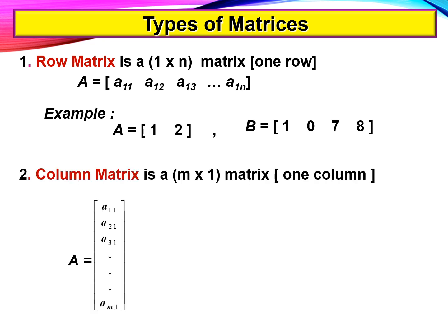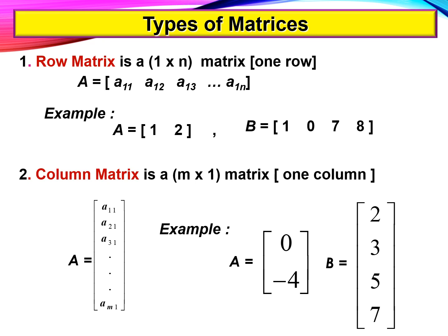Number two, a column matrix is a matrix which has only one column. For example, matrix A: 0, negative 4, and matrix B: 2, 3, 5, 7.